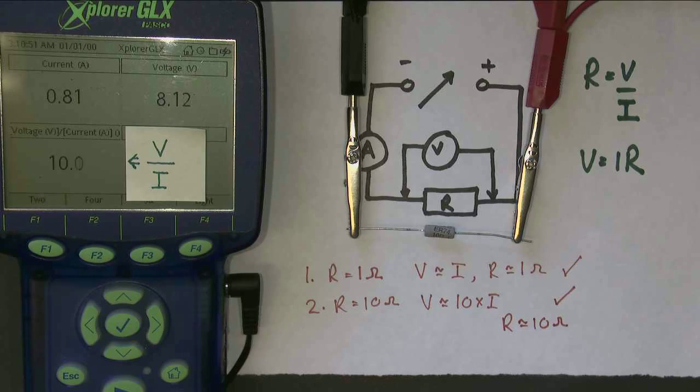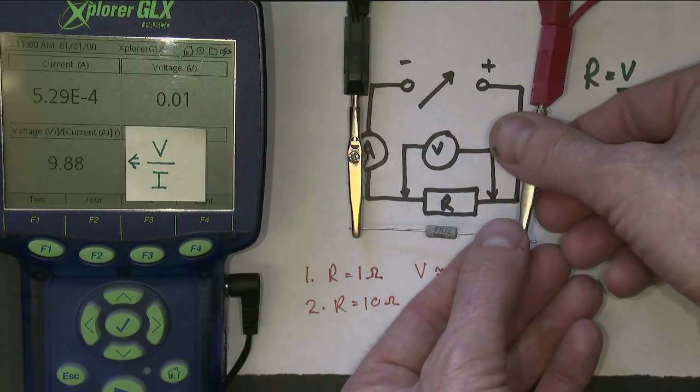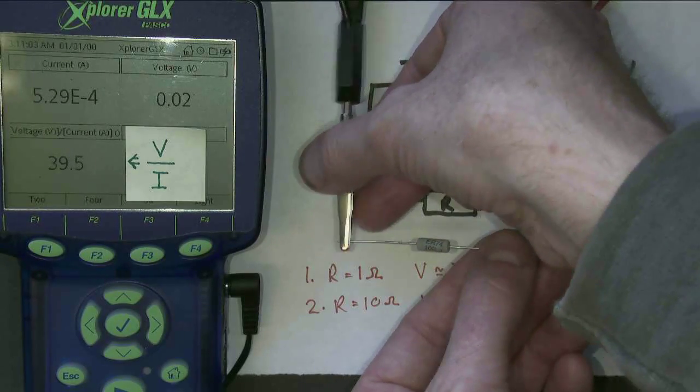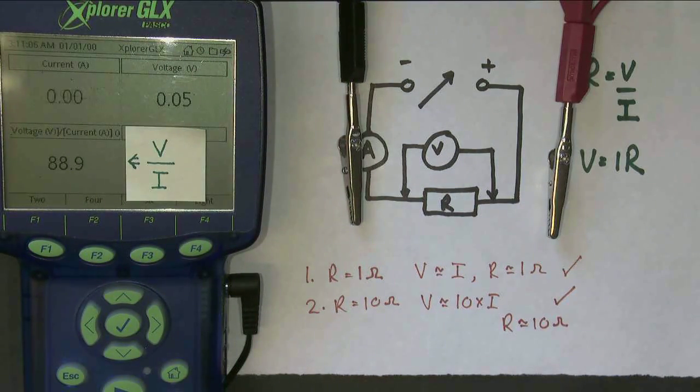Now, the question is, do all components do this? Do all components have a fixed value of V over I, a fixed resistance? Well, you'd think that by me asking the very question, the answer is going to be no. This is going to take a moment to set up. This resistor is really hot, it was actually smoking a moment ago.